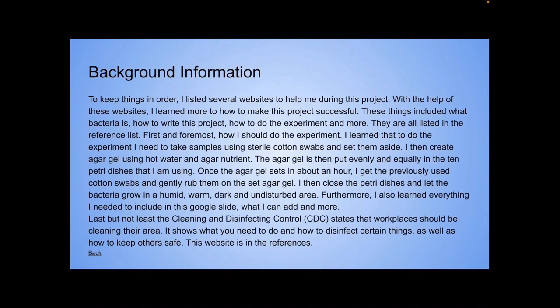First and foremost, how I should do the experiment. I learned that to do the experiment, I needed to take samples using sterile cotton swabs and set them aside. I then created agar gel using hot water and agar nutrient. The agar gel is then poured evenly and equally into the 10 petri dishes that I am using. Once the agar gel sets in about an hour, I get the previously used cotton swabs and gently rub them on the agar gel. I then closed the petri dishes and let the bacteria grow in a humid, warm, dark, and undisturbed area.